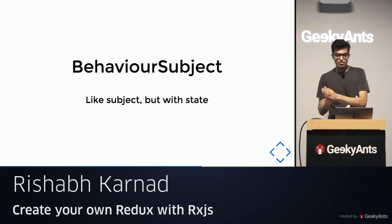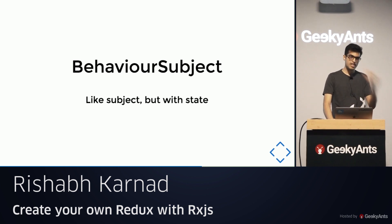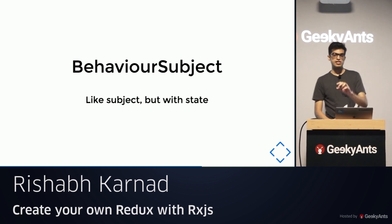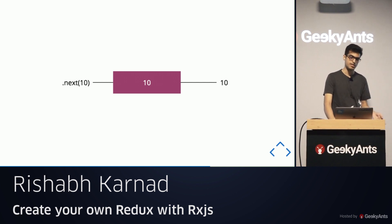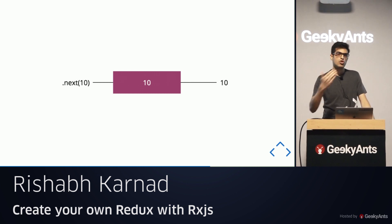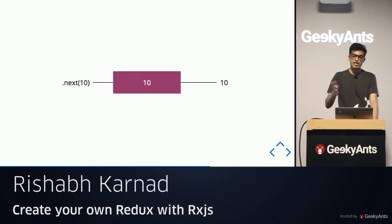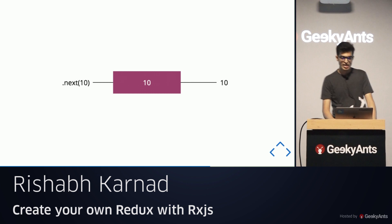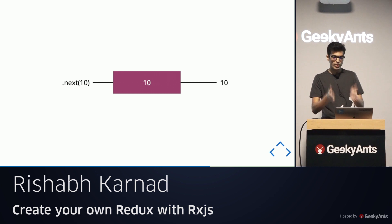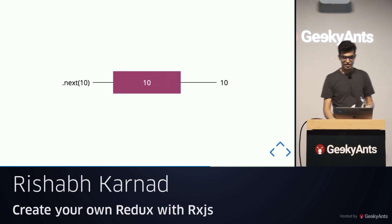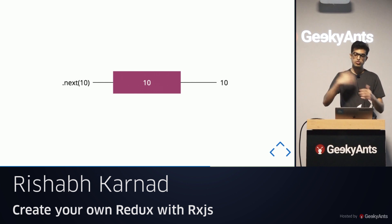There's a small variant of Subject called BehaviorSubject, which is almost exactly the same but also has internal state. When you call dot next on a BehaviorSubject, the value is emitted but also stored. If you repeatedly call dot next, the latest emitted value gets stored internally. This will be important when we implement our own state management, since we need a way to store state and also allow others to subscribe to it.